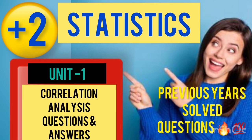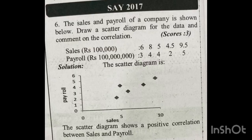What we are looking at is how to draw a scatter diagram. That is one of the features of correlation. These two are related. We are looking at how to draw a scatter diagram. The sales and payroll of a company is shown below. Draw a scatter diagram for the data and comment on the correlation. Scatter diagram is one of the methods to represent correlation.